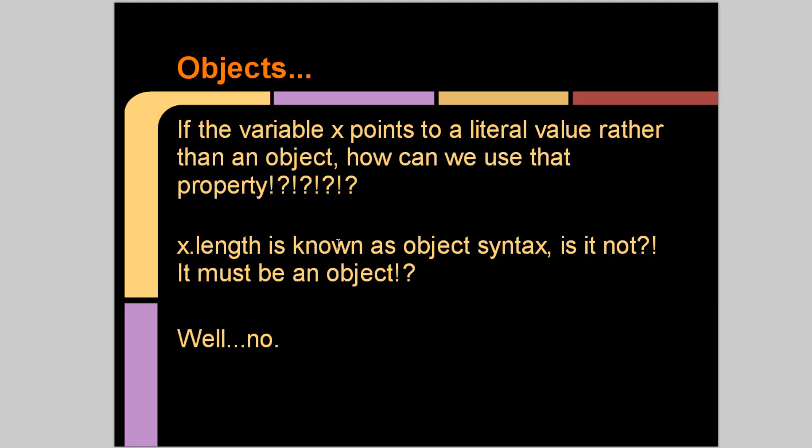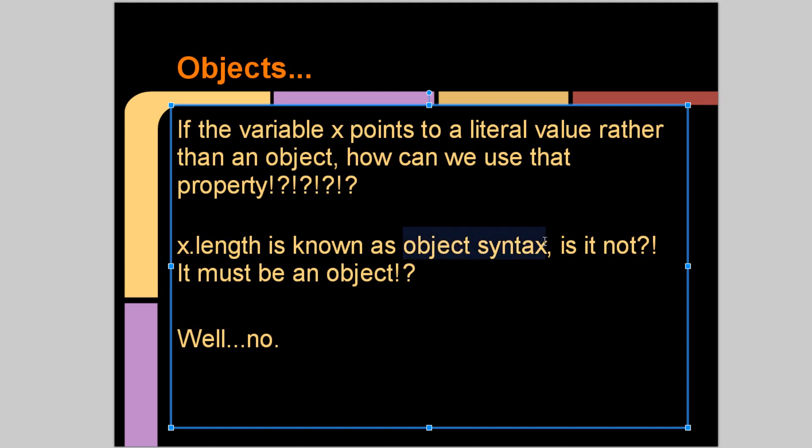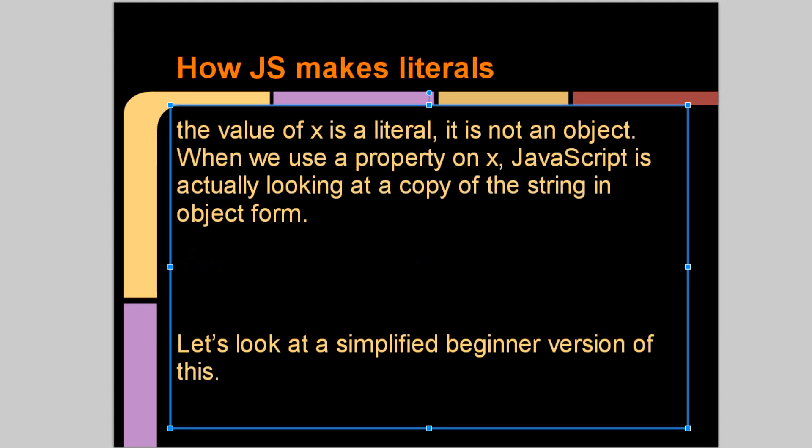x.length is known as object syntax. This is known as object syntax or dot notation. It must be an object, right? Well, no. The value of x is a literal. It is not an object. When we use a property on x, JavaScript is actually looking at a copy of the string in object form.